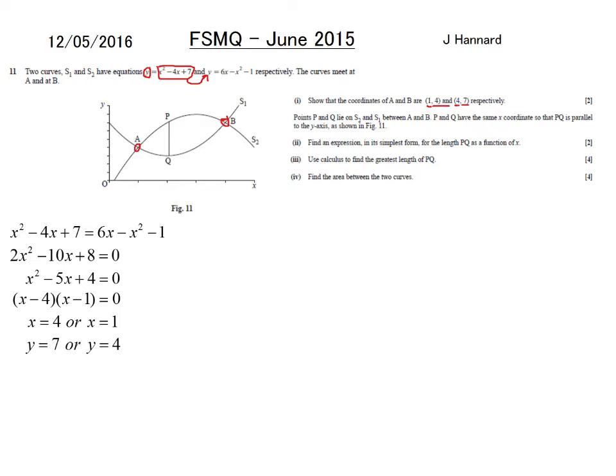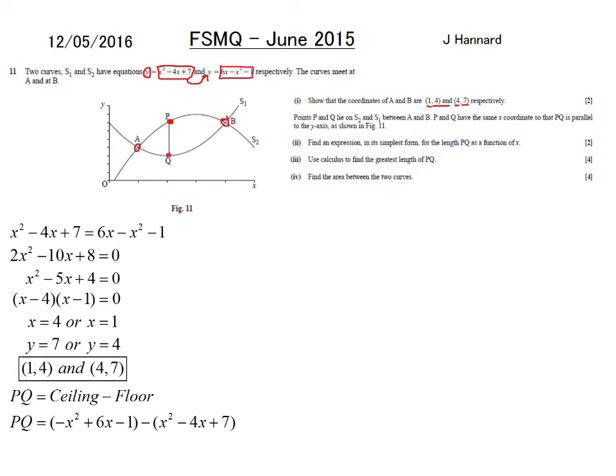Points P and Q lie on S2 and S1 between A and B. P and Q have the same X coordinates so that PQ is parallel to the Y axis. Find an expression in its simplest form for the length PQ as a function of X. Well, PQ is the ceiling to the floor. Because if you think about it, that is the algebra at the top. Because that's the Y coordinate. And that point there is Y equals that. And the distance, that is the big distance, so from 0 to P, so from here to P, minus the distance from Q to 0. So, that is that distance there. So, that's why it's the ceiling to the floor. Like that. So, taking them away from each other, you get that. So, that's what PQ is.